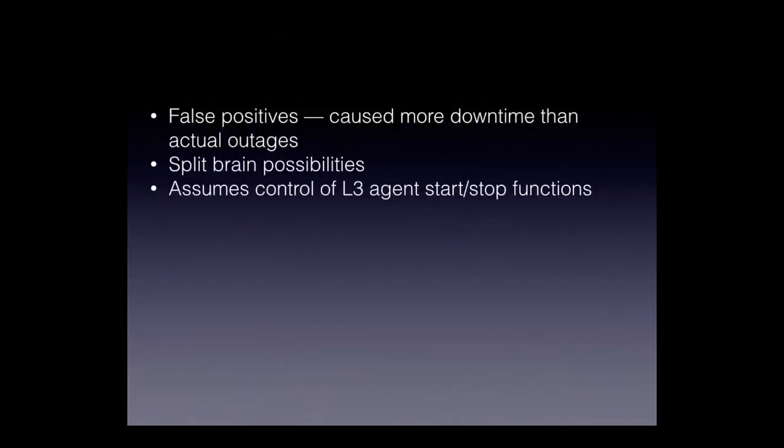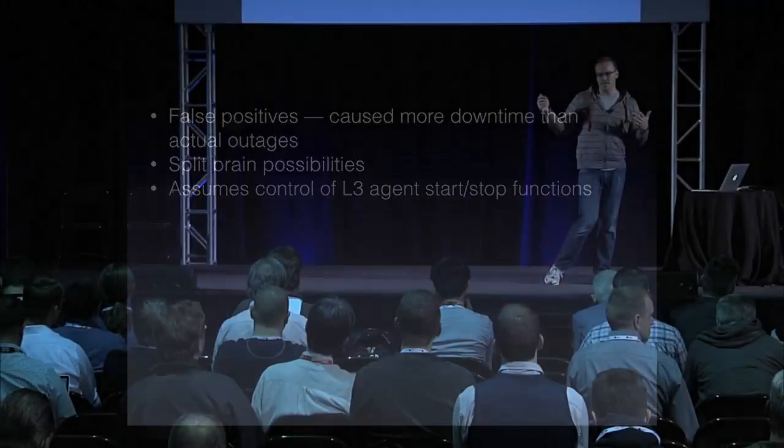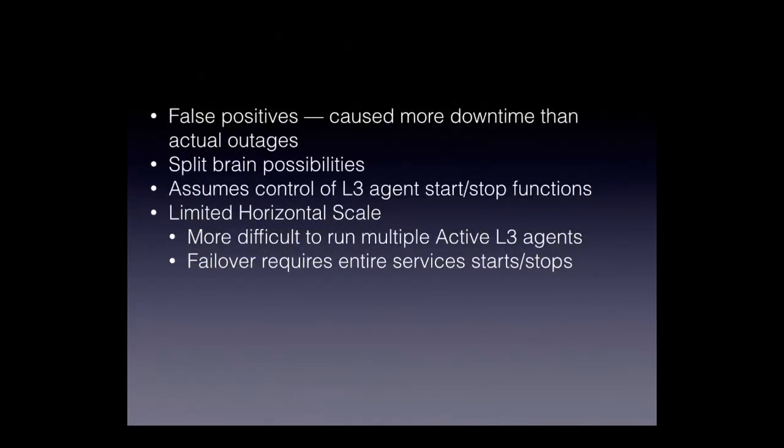Another issue was that Pacemaker basically assumes control of the L3 agent start-stop function. By default, as documented, Pacemaker actually starts your L3 agents — you don't want your init scripts doing it anymore. So you have to install the packages, remove them from RCD, and put them under Pacemaker's control. That's totally doable through Puppet, Chef, or Ansible, but it's just an extra step. There's also limited horizontal scale — it was more difficult to run many active L3 agents and it usually requires a mirrored pair of hosts, like a RAID 1 of Layer 3 functionality.